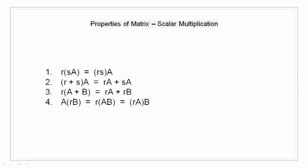Then scalar multiplication. Let R and S be real numbers, and A and B be matrices. Then R times SA is equal to RS times A. And R plus S times A is equal to RA plus SA. And R times A plus B is equal to RA plus RB. And A times RB is equal to RAB, which is equal to RAB.